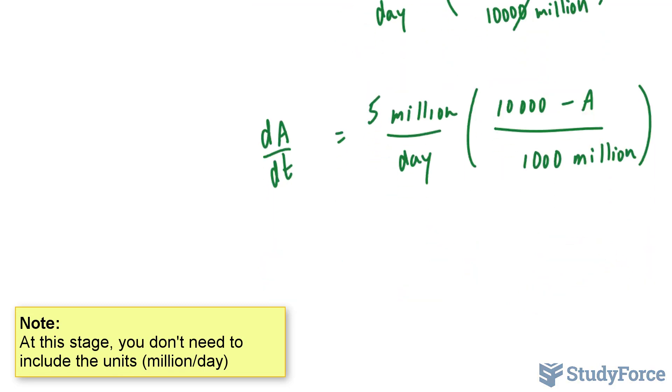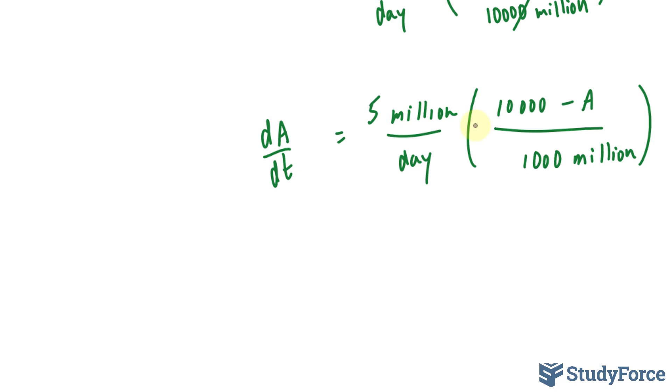Luckily for us, this can be reduced even further. If I distribute this 10,000 million to the first term and to the other term, I end up with this divided by this gives me 10 minus A over 1,000 million.